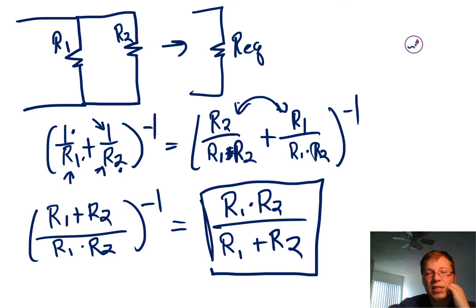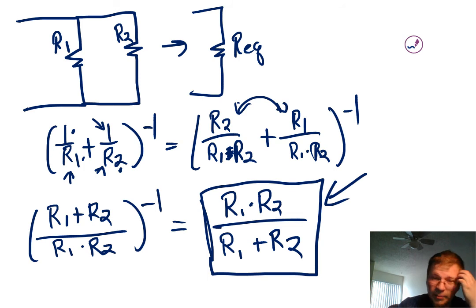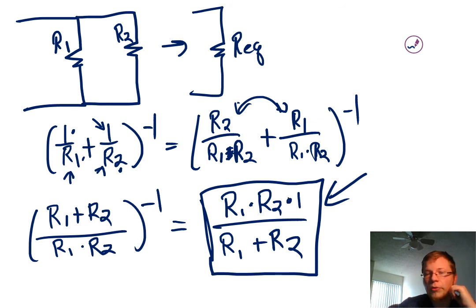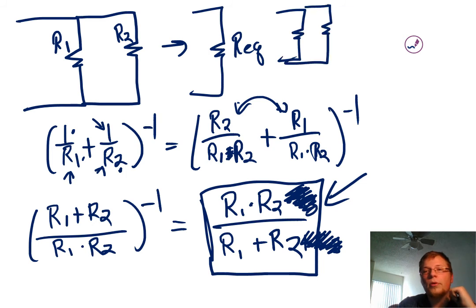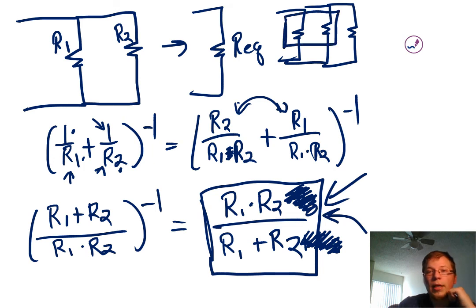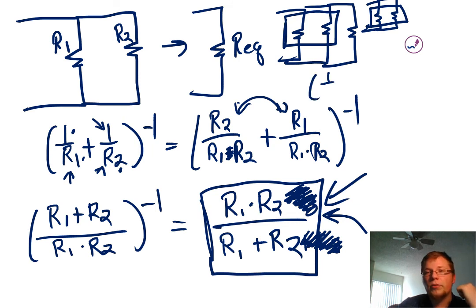If you're taking a circuits class, you've probably seen this equation. A quick note: this only works for two resistors — not three, not four, not five. You can't just add R3 into it; if you try, you'll run into issues. What you can do is apply this equation two at a time — combine two resistors into an equivalent, then combine that with the third. But in that case, it's much faster to just use the reciprocal method.